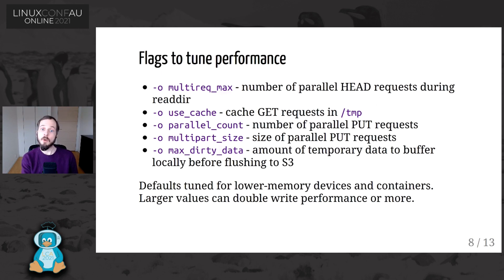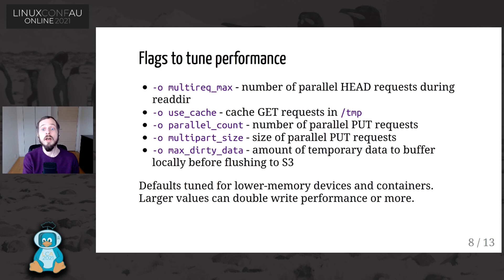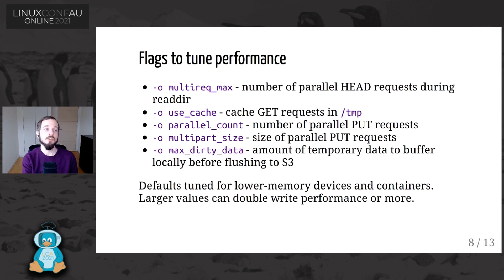S3FS performance can be good. Out of the box, it's tuned for lower-memory systems like desktops, laptops, Raspberry Pis, and low-memory containers, but you can easily double performance by changing some defaults. For readdir, multiReqMax — the number of parallel HEAD requests readdir can issue simultaneously — defaults to 20, and you can get linear performance by raising it. The dash-o use_cache flag is important for use cases accessing the same data repeatedly; it's off by default because it can use a lot of space in /tmp. The parallel_count flag — the number of parallel PUT requests, defaulting to 5 — is one of the easier ways to double write performance.